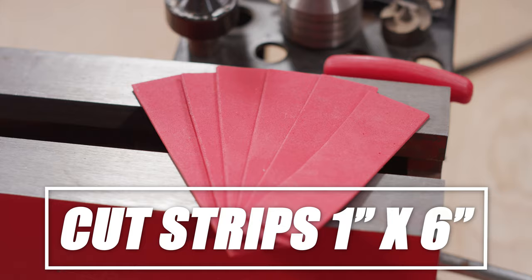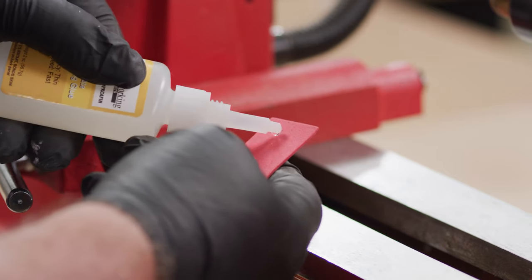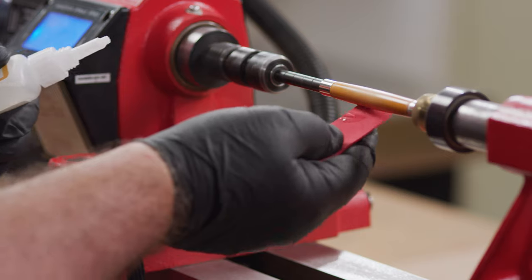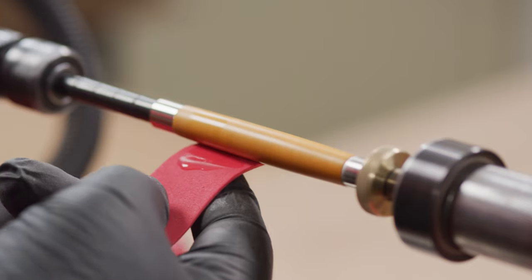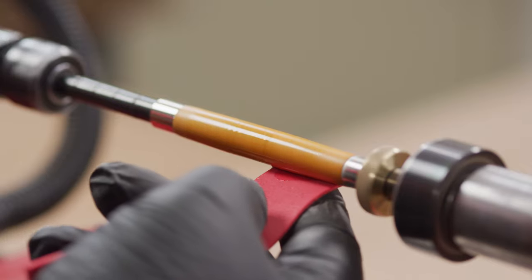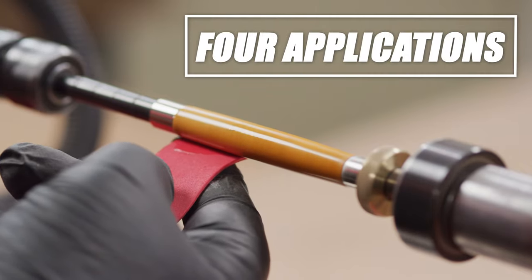Apply a drop of cyanoacrylate to one end of the craft foam. With the lathe speed of approximately 1000 RPM, move the craft foam back and forth across the pen blank for even distribution. Using both sides and both ends of the foam, you can get four applications.